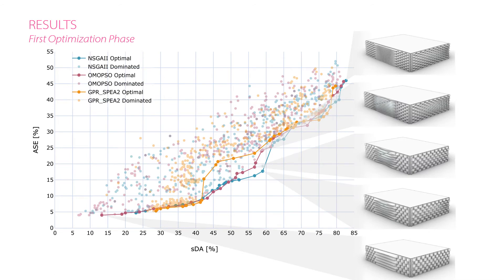Here we can see several design solutions of the different lattice forms produced by our system. At the bottom, we have the solution with the best annual sun exposure performance but the worst spatial daylight autonomy performance. While at the top, we see the solution with the best spatial daylight autonomy performance but the worst annual sun exposure performance. We also see that NSGA2 was able to produce a solution that better balances both daylight metrics.